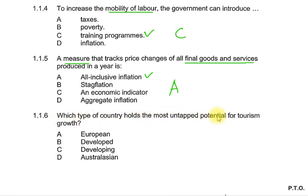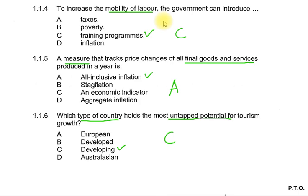Question 1.1.6: Which type of country holds the most untapped potential for tourism growth? The keyword is 'which type of country with the most untapped potential for tourism.' C is the correct answer — developing. A developing country like South Africa and many other African countries. Though South Africa is developing, places like Johannesburg and surrounding suburbs such as Sandton, Fourways, and Midrand could convince you it is developed.